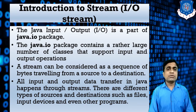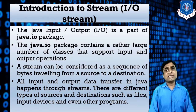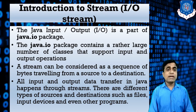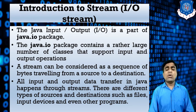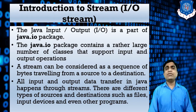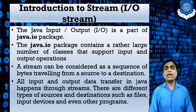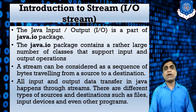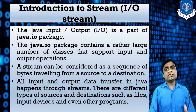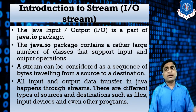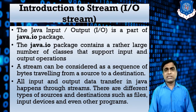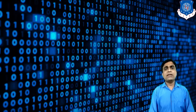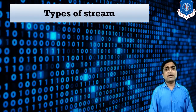There are different types of sources and destinations, such as a file, an input device, or even another program. All these types of functionality — like getting data from another file or printing data onto a file — can be developed using the stream. Let's discuss the different types of streams available in Java.